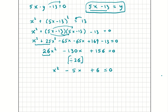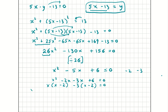We need two numbers that multiply to give 6 and add to give -5: that's -2 and -3. So: x² - 2x - 3x + 6 = 0, factoring as x(x - 2) - 3(x - 2) = 0, giving (x - 3)(x - 2) = 0. Therefore x = 3 and x = 2 are our two values for x.